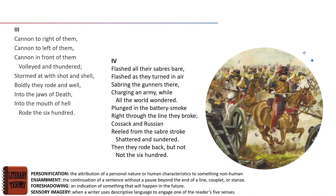The pace picks up again with verbs linked to violent experience: 'plunged in the battery smoke, right through the line they broke. Cossack and Russian reeled from the sabre stroke, shattered and sundered.' The sibilance of 'sabre stroke, shattered, sundered' reflects the viciousness of the battle. Then enjambment in 'they rode back but not the 600' spreads over two lines, giving a short gasp at the reality that not all of them can retreat to safety. There's vivid sensory imagery throughout, particularly sound, creating a hellish setting — but no graphic descriptions of blood; it's all about action, energy, and the sound of fighting.